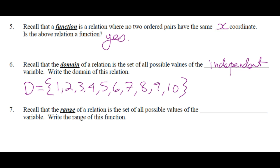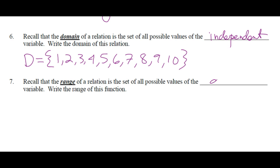And there is the set, right? 1, 2, 3, 4, 5, 6, 7, 8, 9, 10. Recall that the range of relation is a set of all possible values of the dependent variable.